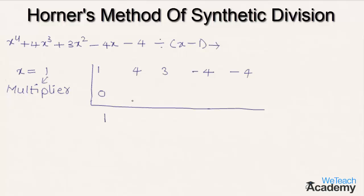Now let us multiply the common multiplier 1 with 1. We get the result 1 below the second coefficient of the expression, 4. By adding 4 and 1, we get 5.